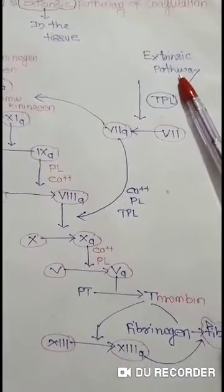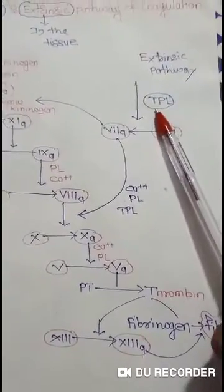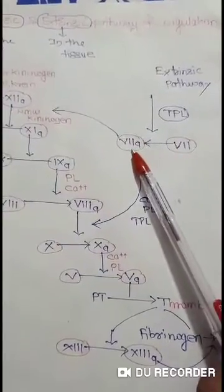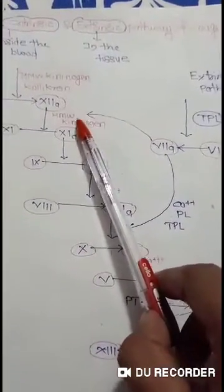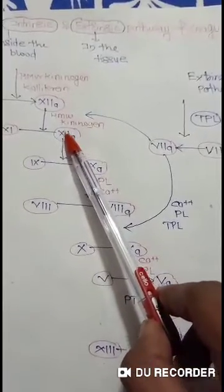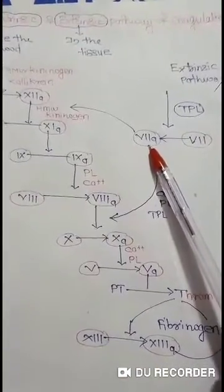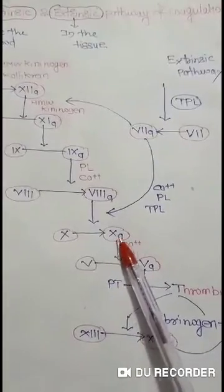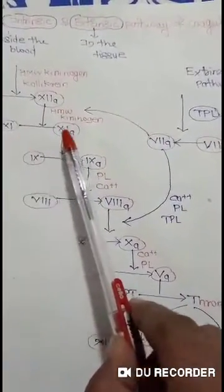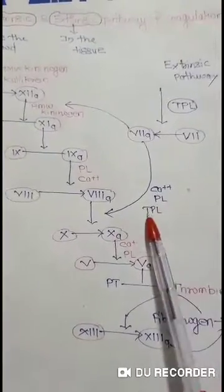Now we will see the Extrinsic Pathway of Coagulation. In the Extrinsic Pathway, there is a Tissue Thromboplastin from the tissue — that's why the name Extrinsic Pathway. This Tissue Thromboplastin converts Factor Number 7 to Activated Factor Number 7. This Activated Factor Number 7 helps to convert Factor Number 11 to Activated Factor Number 11, and also helps in the conversion of Factor Number 10 to Activated Factor Number 10, with the help of Calcium ions, Phospholipase, and Tissue Thromboplastin.